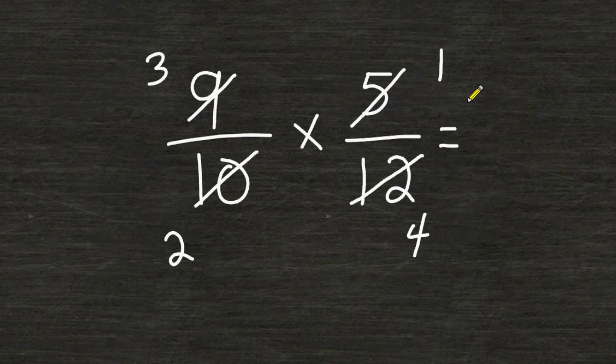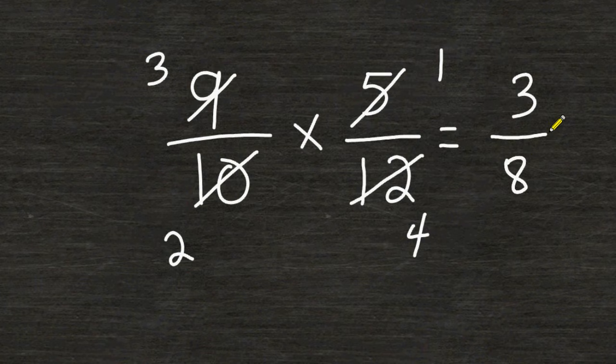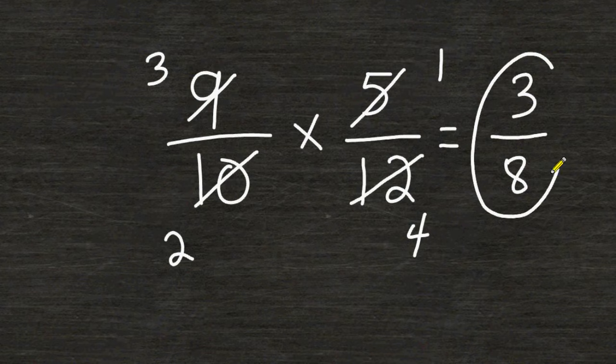The last thing we do is we multiply our remaining numerators together to get our numerator and 3 times 1 is 3, and then multiply our remaining denominators and the product of 2 and 4 is 8. So we would say that 9/10 multiplied by 5/12 is equal to 3/8.